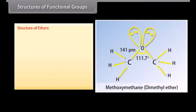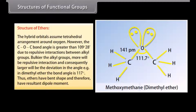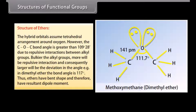Structure of ethers: the hybrid orbitals assume a tetrahedral arrangement around oxygen; however, the C-O-C bond angle is greater than 109°28' due to repulsive interactions between alkyl groups. The bulkier the alkyl groups, the greater the repulsive interaction and the larger the deviation. For example, in dimethyl ether the bond angle is 117°. Ethers thus have a bent shape and therefore possess a resultant dipole moment.